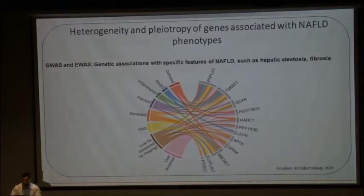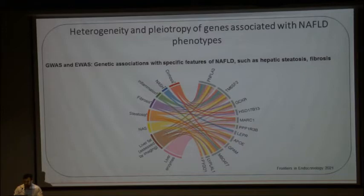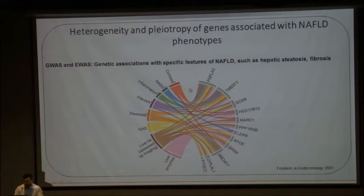This slide shows the multiple genes which have been implicated in the pathogenesis of NASH and the various features seen across the spectrum of NASH, ranging from varying liver enzymes and liver fat, non-alcoholic steatosis, fibrosis, inflammation, NASH, and cirrhosis. There is multiple heterogeneity and pleiotropy of genes associated with multiple phenotypes of NAFLD. We will be discussing these genes in detail later.